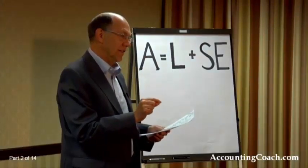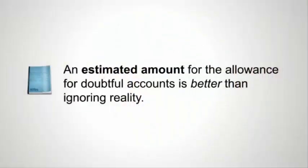The key point is that putting in any estimate is better than putting in nothing. If we have $40,000 in receivables and some shaky ones, rather than ignoring it and listing the full $40,000, it's better to say maybe it's $500 to $2,000 — compromise and put $1,300. An estimate of $1,300 is better than zero if there are really some shaky accounts.